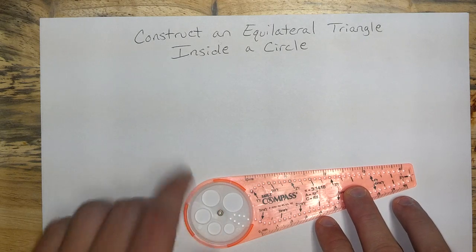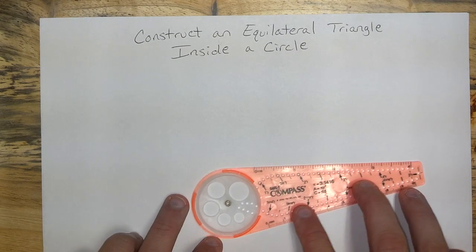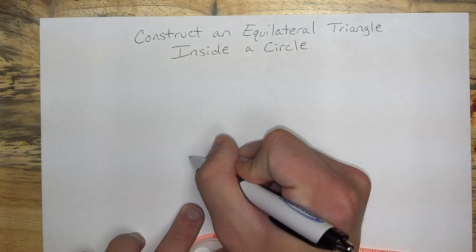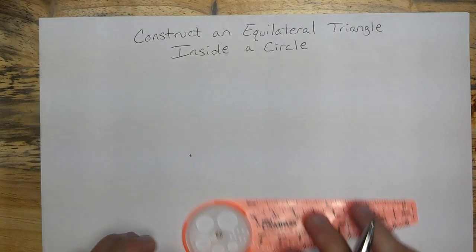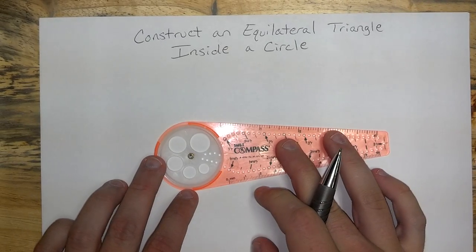To construct an equilateral triangle inside of a circle, first you'll need a circle. Go ahead and mark the center and create a circle.